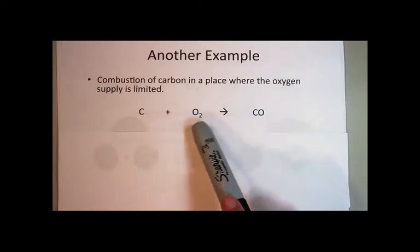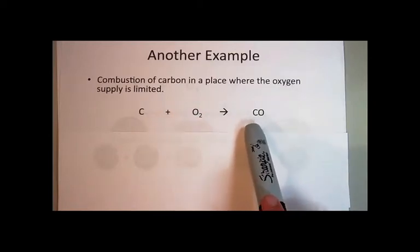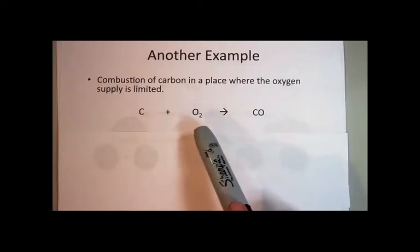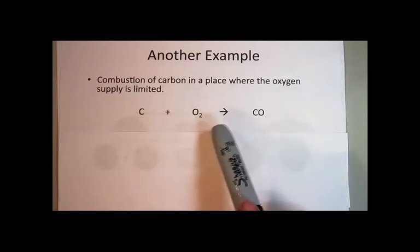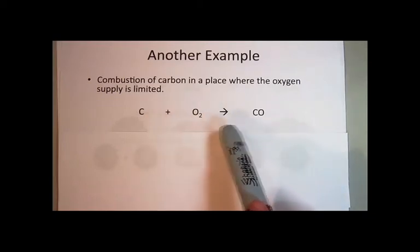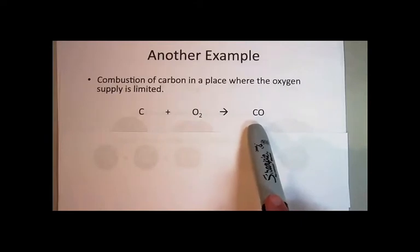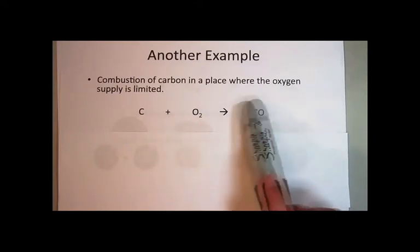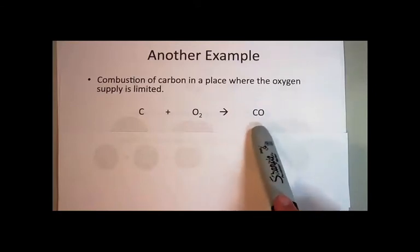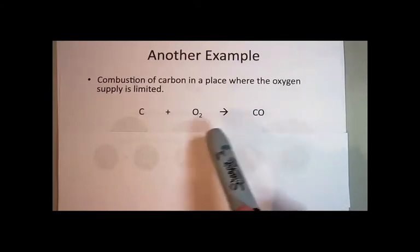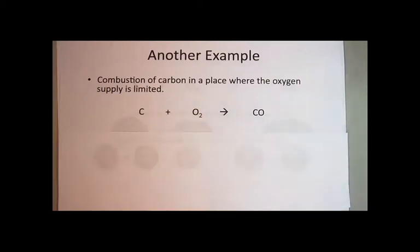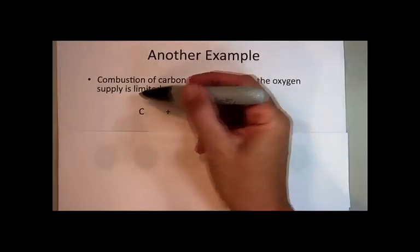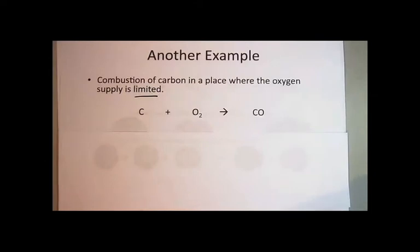And this is called incomplete combustion. Complete combustion would be the carbon would take on as many oxygens as it could handle, which would be two of them, and you'd get carbon dioxide as a product. So incomplete combustion is when the carbon is not oxidized all the way. But at this point in time, it's just important for you to know that sometimes in the place where the oxygen supply is limited, we're gonna get carbon monoxide as the product.